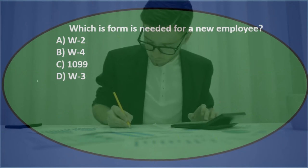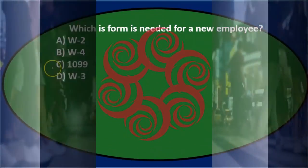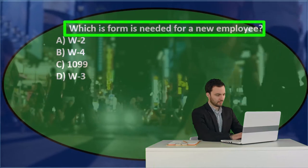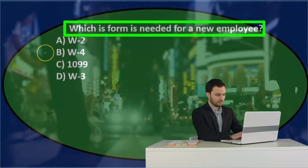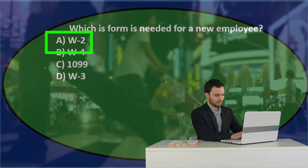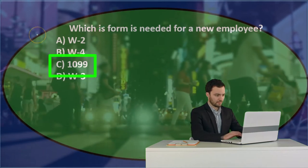Next question: which form is needed for a new employee? A) W-2, B) W-4, C) 1099, D) W-3. So let's go through the process of elimination.